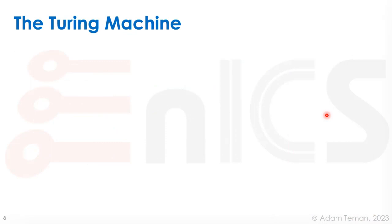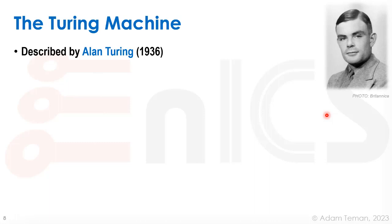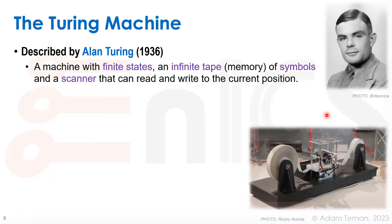That was a mechanical computer powered by a steam engine, way before its time. The real breakthrough came when Alan Turing came along. In 1936, he came up with a paper about a machine that has finite states, an infinite tape or memory that can hold symbols on it, and a scanner that can read and write to the current position. This was a completely abstract idea. On the tape you can have symbols, and at any moment the current symbol is scanned.